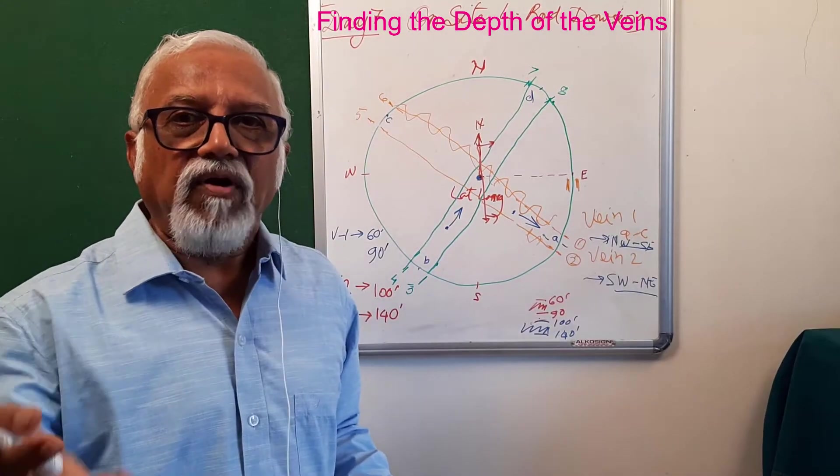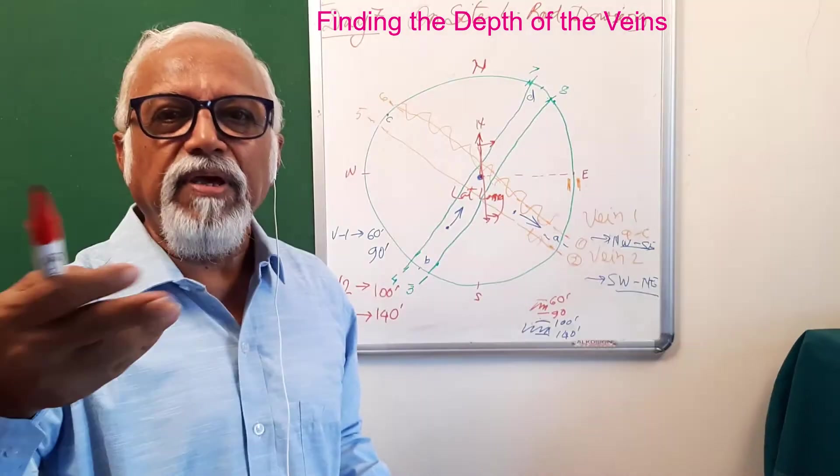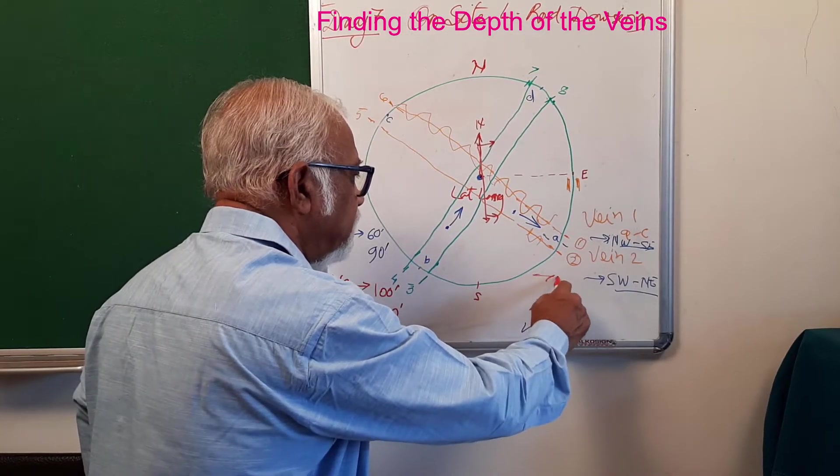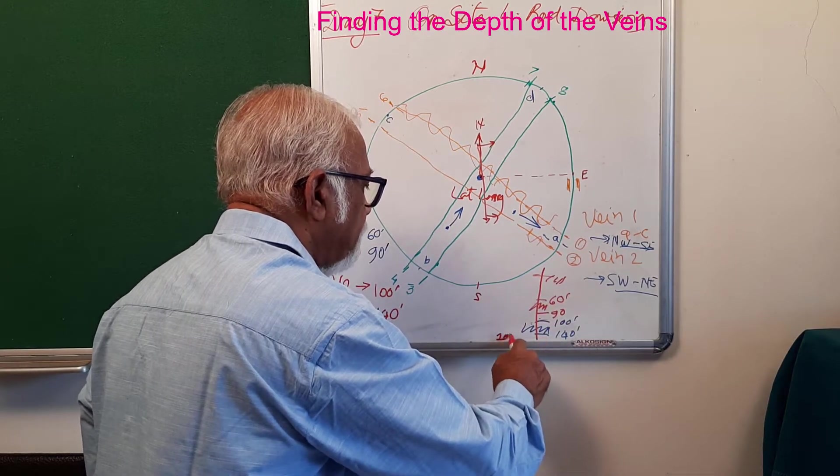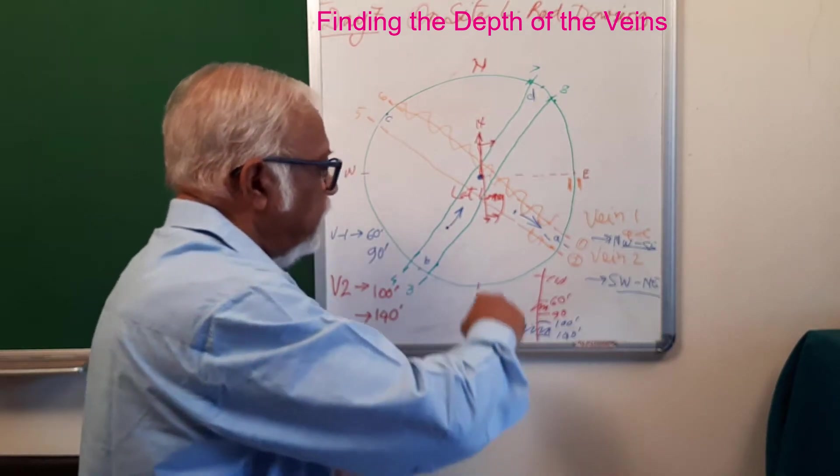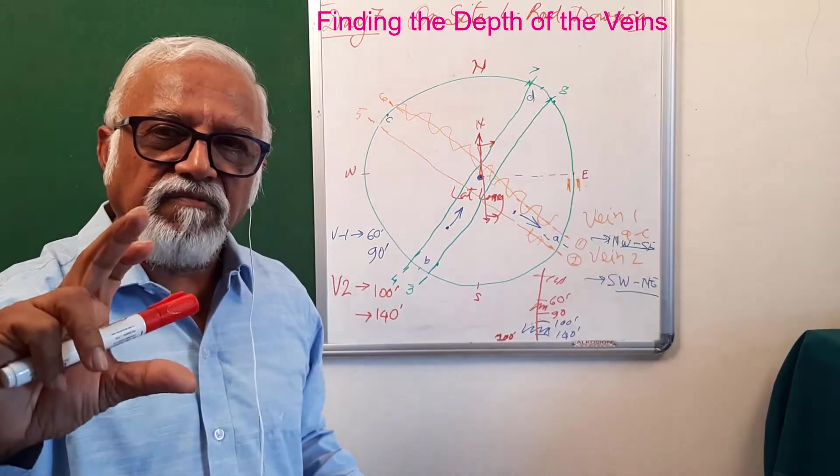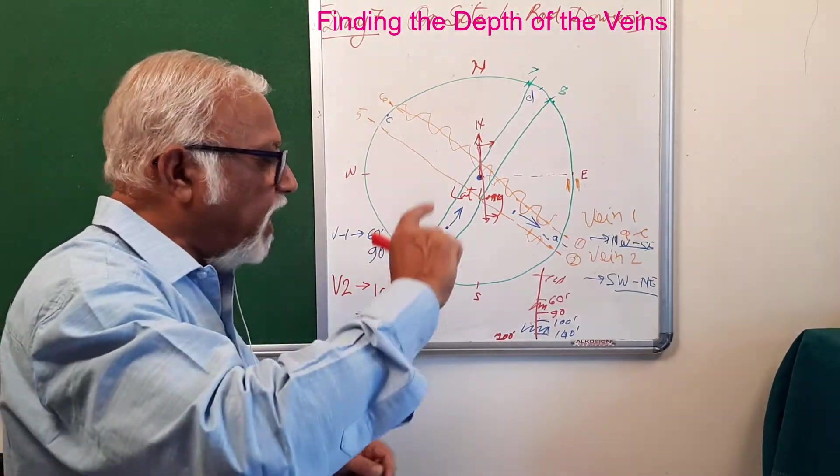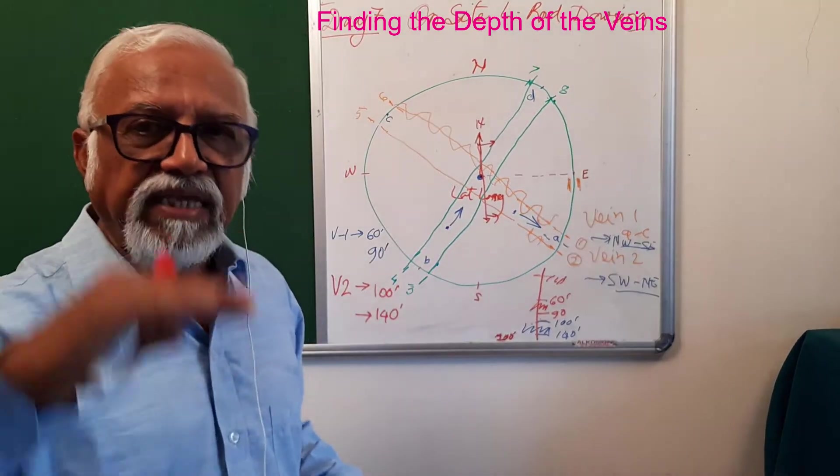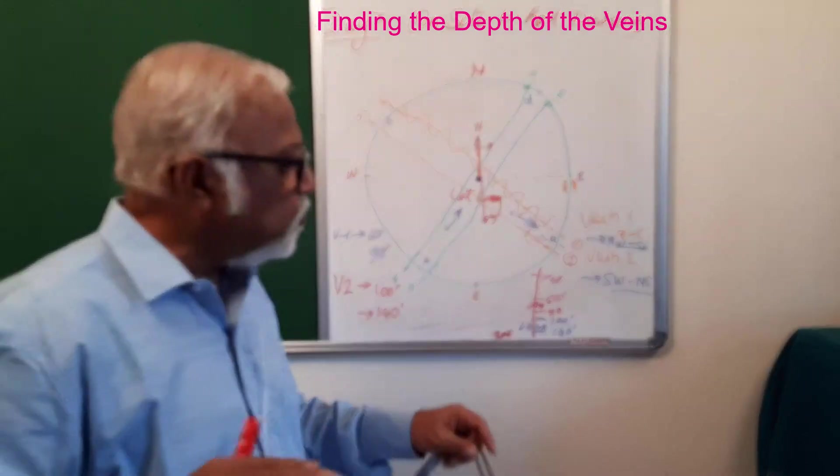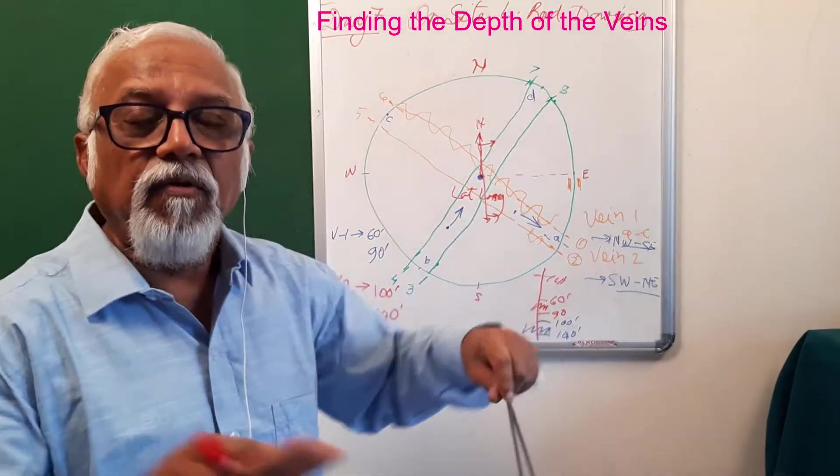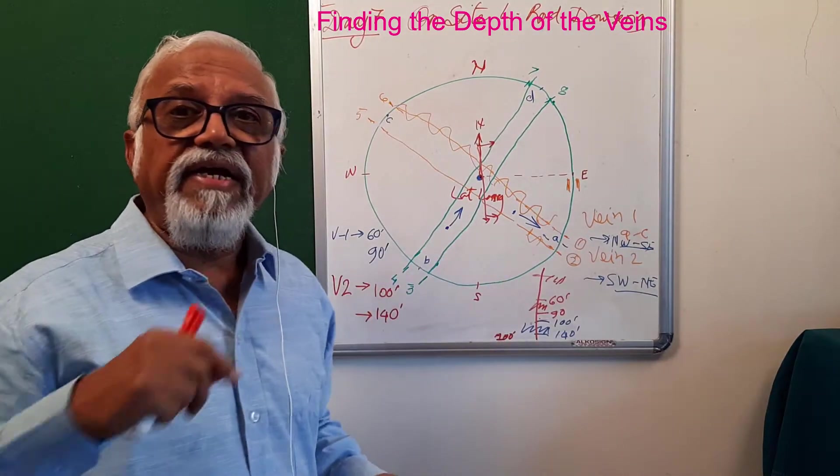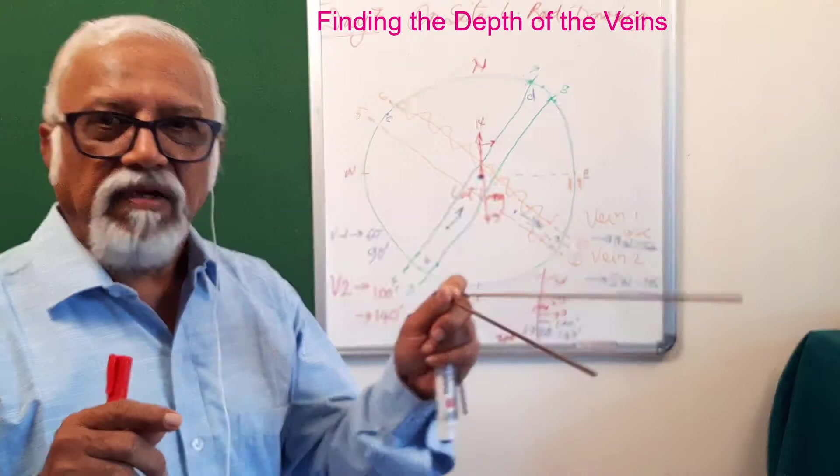Because this is an existing bore well, I can ask the owner. They say from the ground level we went 200 feet below. You got soft surface between 60 and 90 feet, then 100 and 140 feet. So the first pervious layer is 30 feet and the second layer is 40 feet - a total of about 70 feet giving the bore well water.